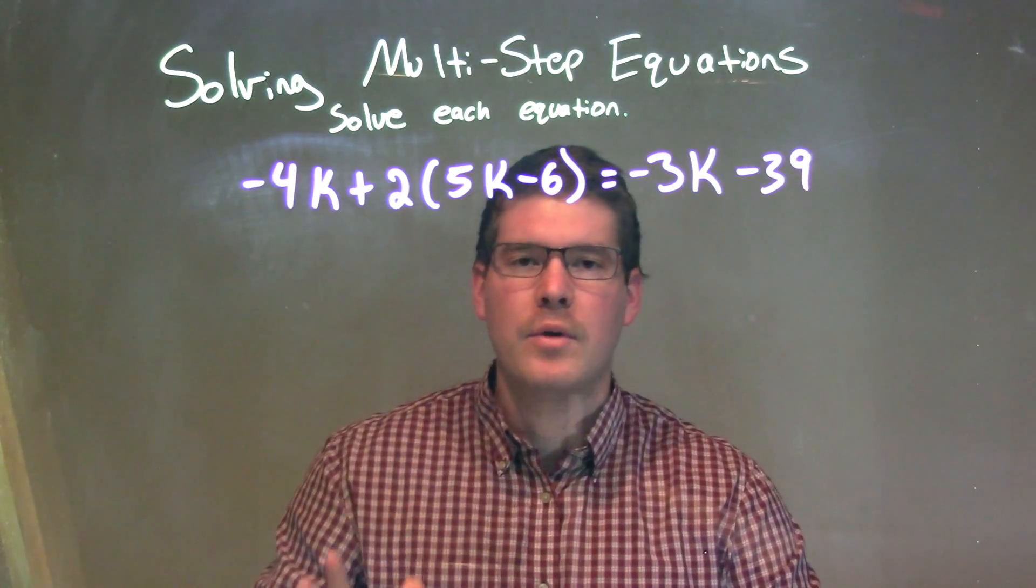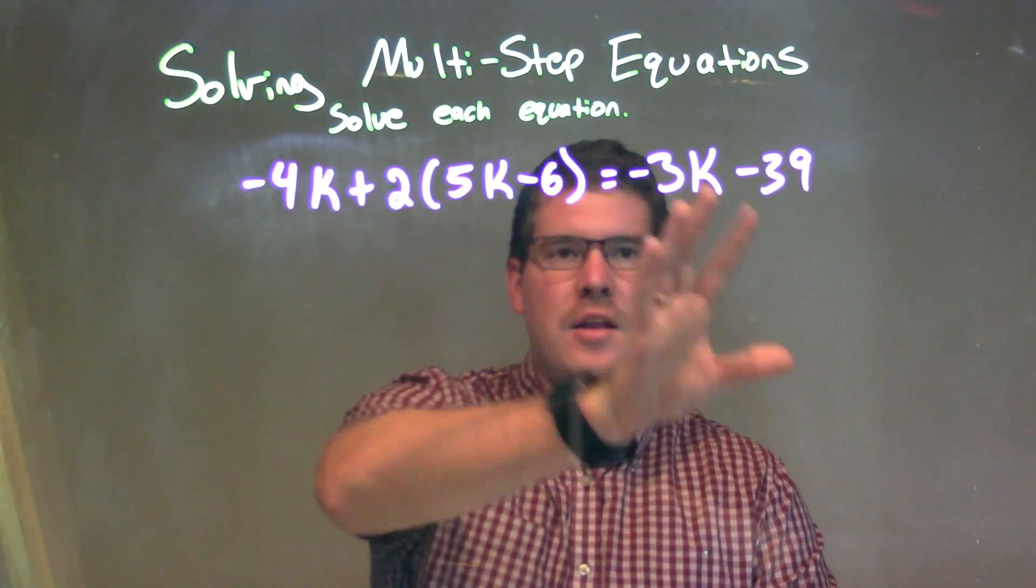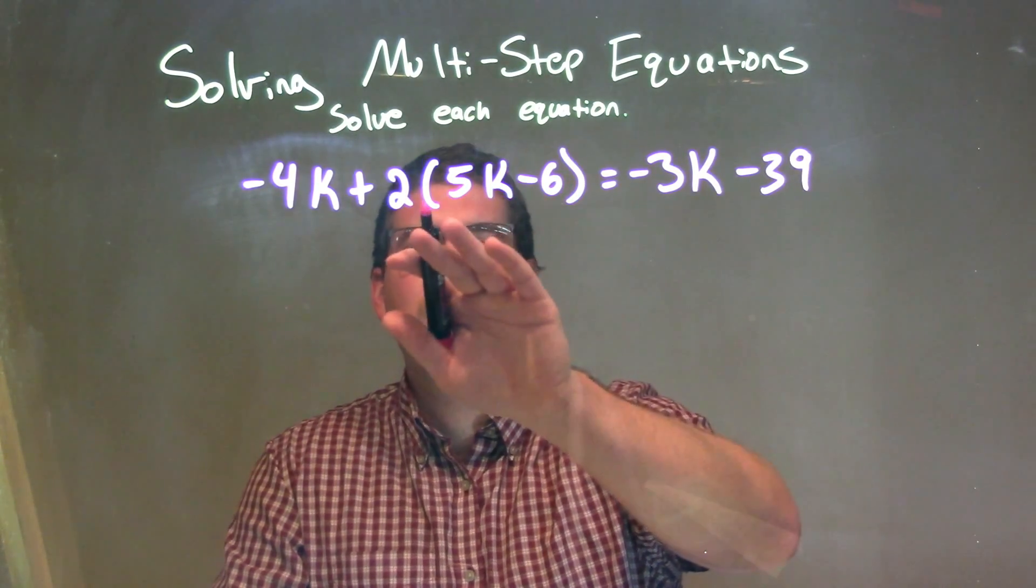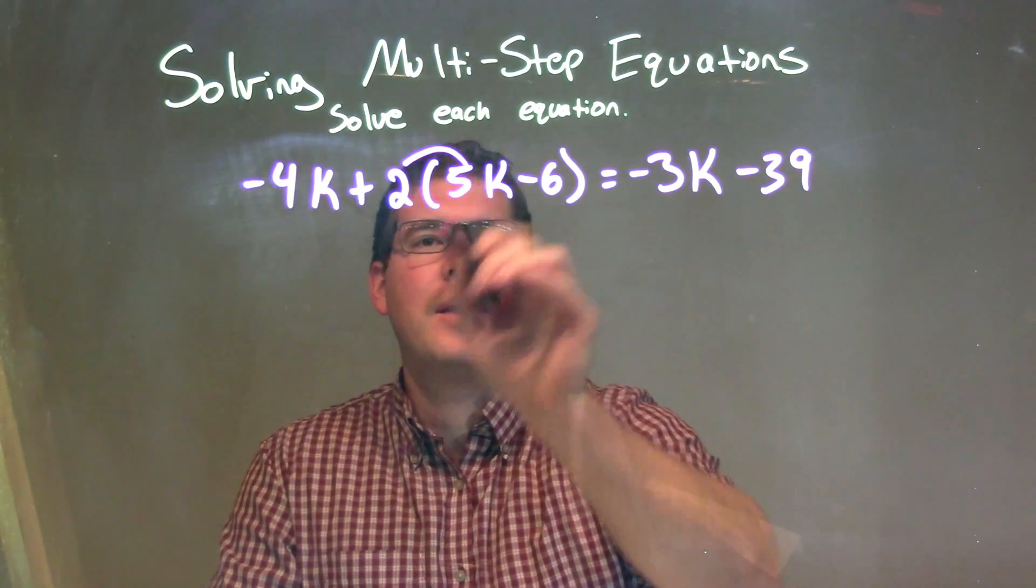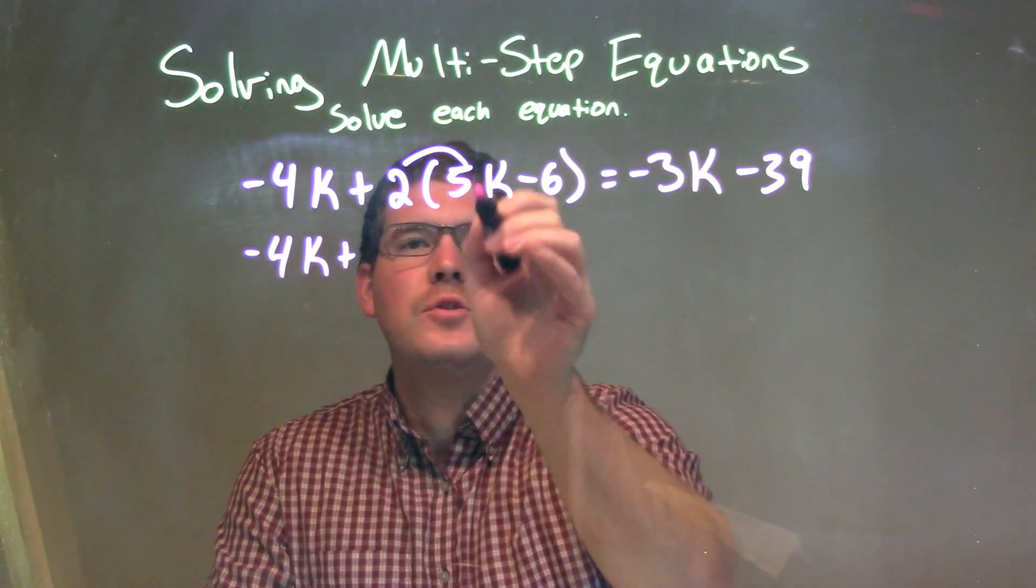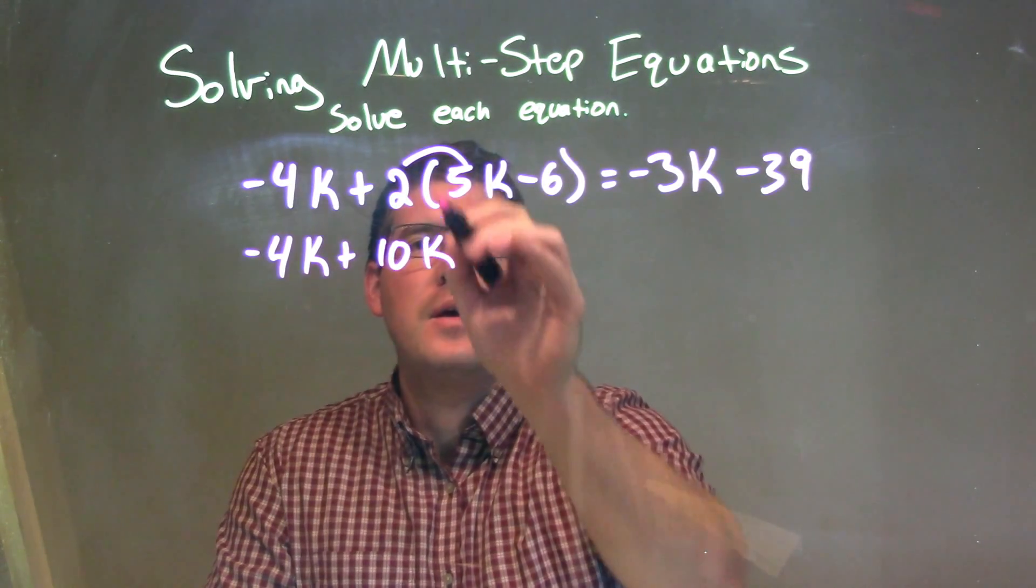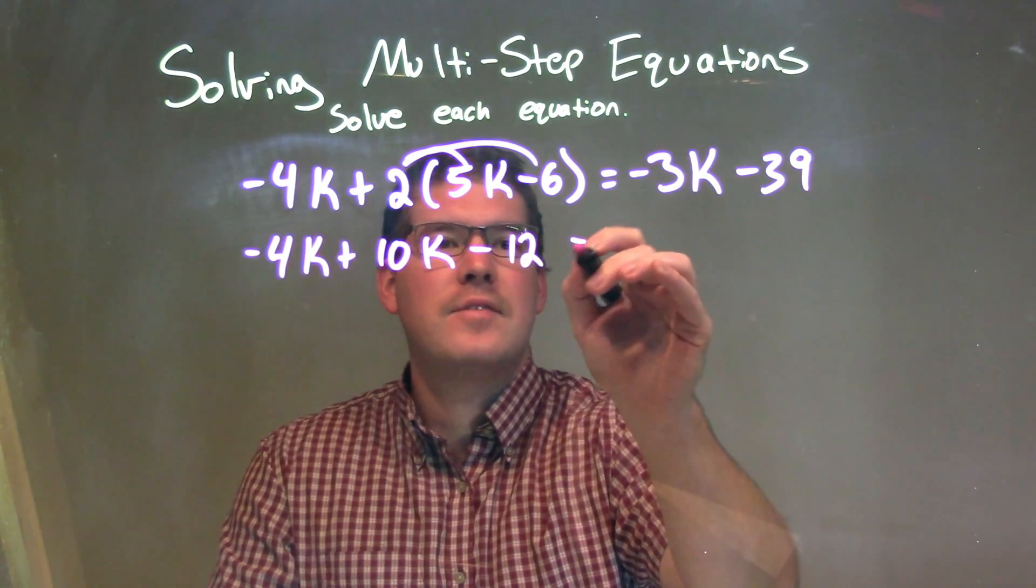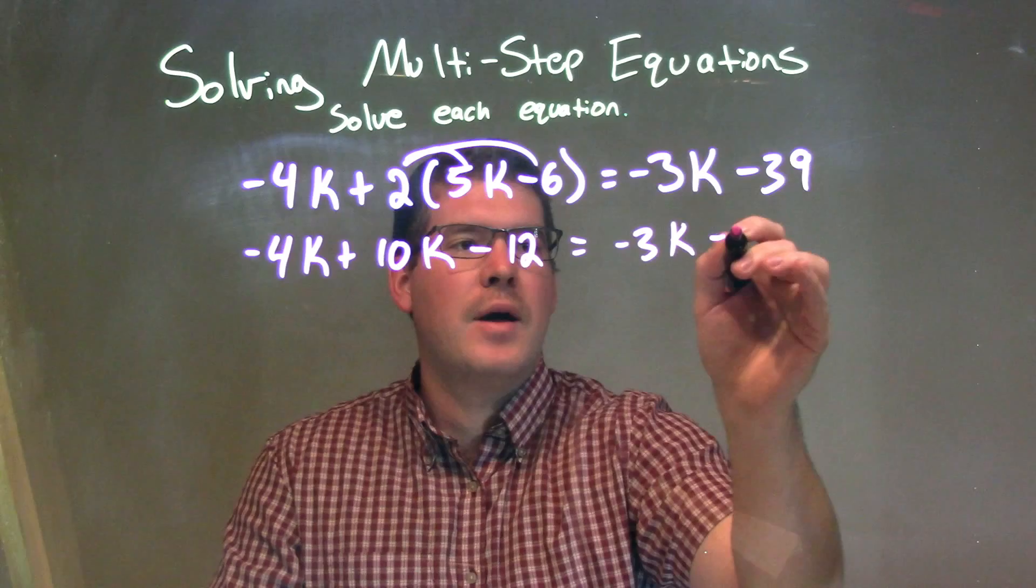Alright? Well, first thing I want to do is simplify on each side of the equation. So, I'm going to distribute this 2 to the 5k and the minus 6. So, bring down the minus 4k right here. 2 times 5k is 10k, and 2 times minus 6 is minus 12. And that's equal to negative 3k minus 39.